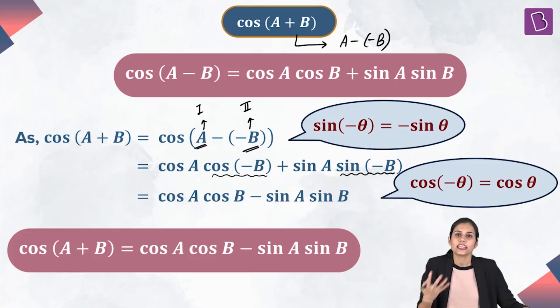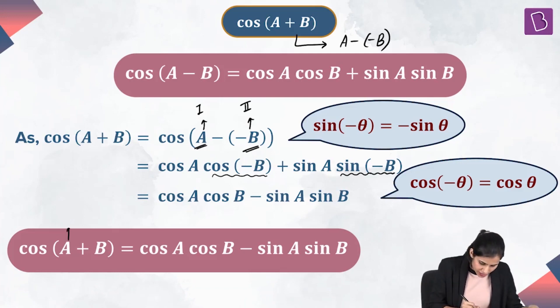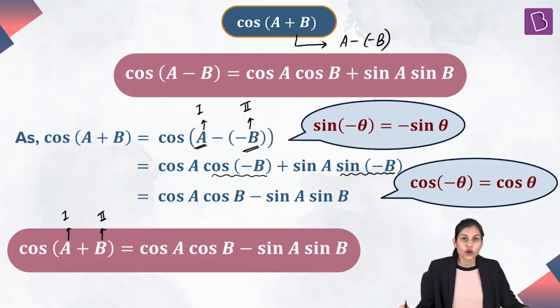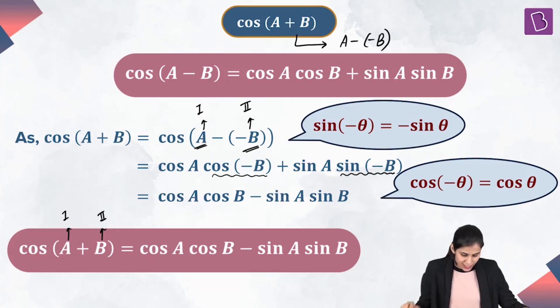An efficient way to remember this: treating A as the first angle and B as the second, cos of first plus second equals cos of first times cos of second minus sin of first times sin of second.